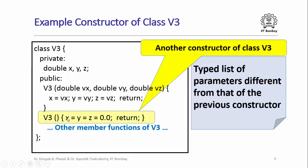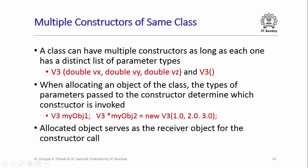Here is the second constructor function of class V3. It once again has the same name as the class and no return type, but unlike the first constructor it does not accept any input parameters. In this case it simply initializes all three data members to 0.0. The important point is that although these two constructor functions share the same name, they have different typed lists of parameters. In C++ the same class can have multiple constructors as long as each has a distinct list of parameter types.